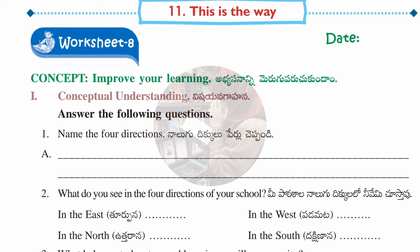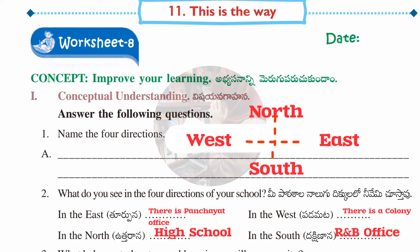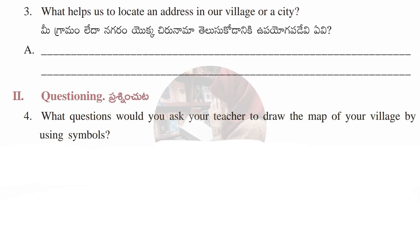Worksheet number eight — concept is 'Improve Your Learning.' First section, conceptual understanding: answer the following questions. First question: name the four directions. Answer: north, east, west, and south. Second question: what do you see in the four directions of your school? Answer: in the east — panchayat office, in the west — a colony, in the north — a high school, in the south — an office.